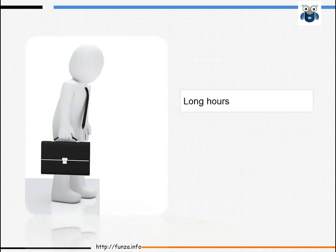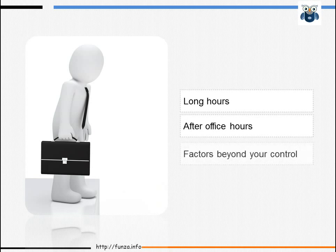Long hours are normal in this role. Your work will often begin when others finish theirs — after office hours and on weekends. Often, resolution of a problem may depend on factors beyond your control. For instance, if office staff are unable to send emails to members in another region, the problem could be in part of the network outside your control, putting pressure on you to get others to solve a critical problem. Another frustration is dealing with problem tickets logged at incorrect priority levels — for example, a customer logging an urgent ticket when it actually is not.